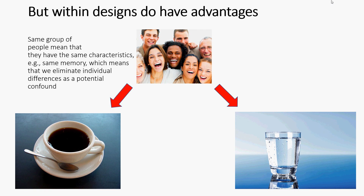The advantage of using a within groups design is that it factors out individual characteristics like natural differences in memory, because you're using the same group. The pros and cons of between and within groups designs are essentially the opposite of each other. Within groups removes individual differences but introduces a learning or order effect, whereas between groups has no learning effect but introduces individual differences between groups.